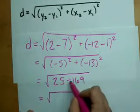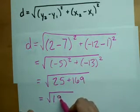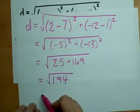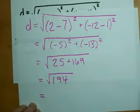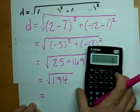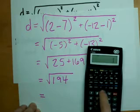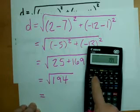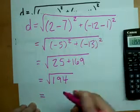That makes 25, and 13 squared is 169. When you add those two together, you get 194, and so the final distance is whatever the square root of 194 is, 13.9.